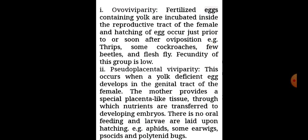Second is pseudo-placental viviparity. This occurs when a yolk-deficient egg develops in the genital tract of the female. The mother provides a special placenta-like tissue through which nutrients are transferred to developing embryos. There is no oral feeding and larvae are laid upon hatching. Examples: aphids, some earwigs, saucocytes, and polytenid bugs.